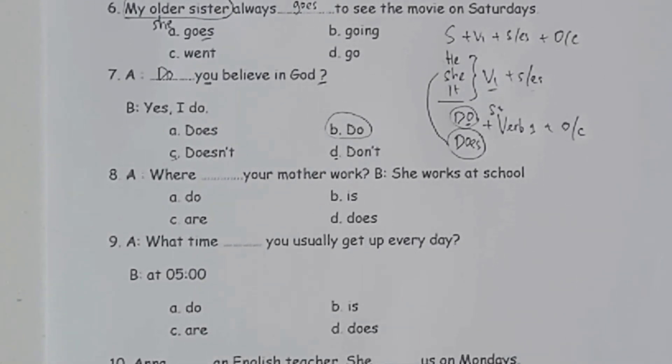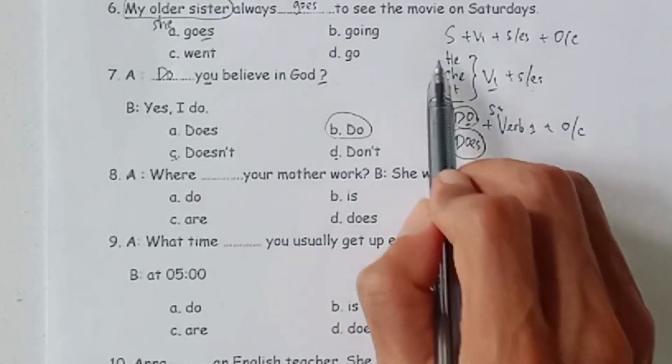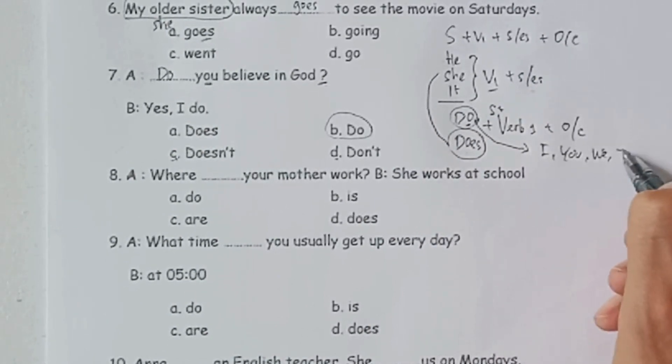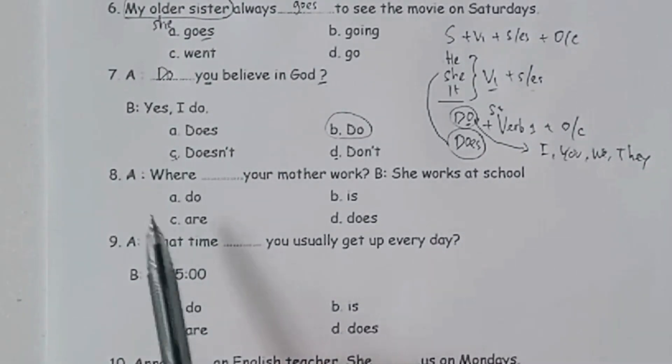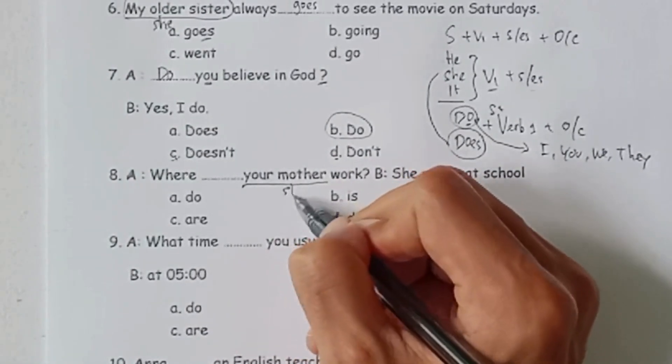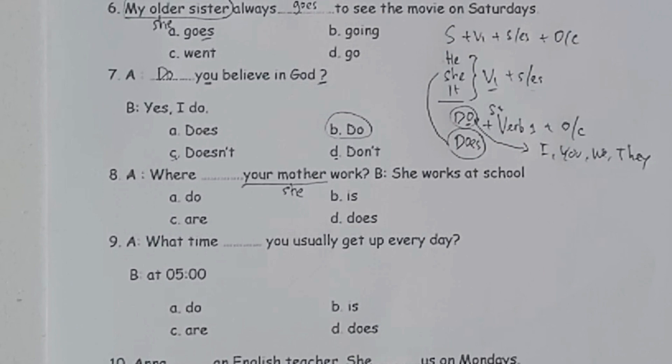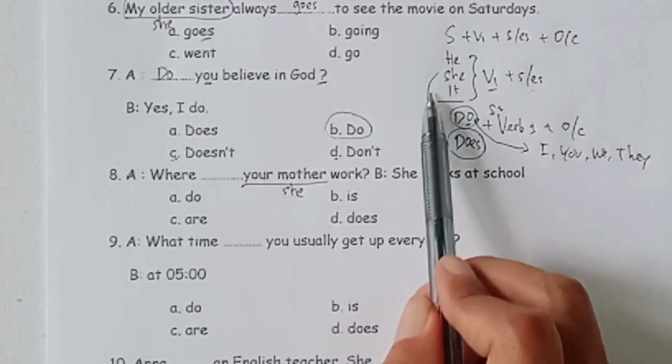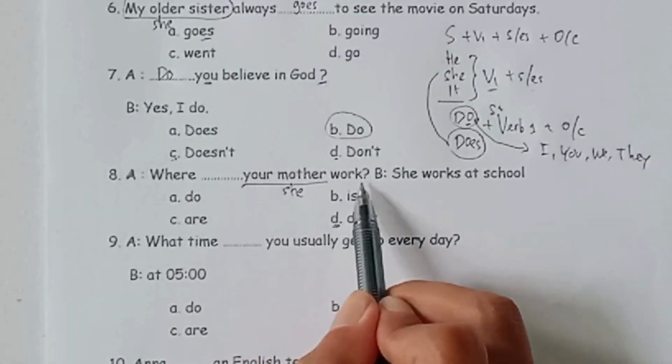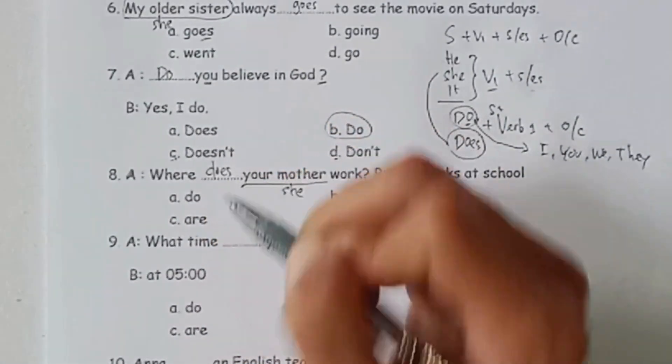Soal nomor delapan. Where titik-titik your mother work? Si B menjawab she works at school. Pilihan jawabannya do, is, are, atau does. Kembali lagi kita ke formula awalnya. Does itu dipasangkan dengan subject he, she, it. Sementara do itu dipasangkan dengan subject I, you, we, dan they. Maka where titik your mother. Di sini ada kata your mother. Your mother berarti ibumu, berarti dia perempuan, she. Kembali ke aturan awal, ketika dia subjectnya he, she, atau it, maka dia memiliki kata bantu does. Berarti where does your mother work? She works at school. Jadi jawabannya adalah does.